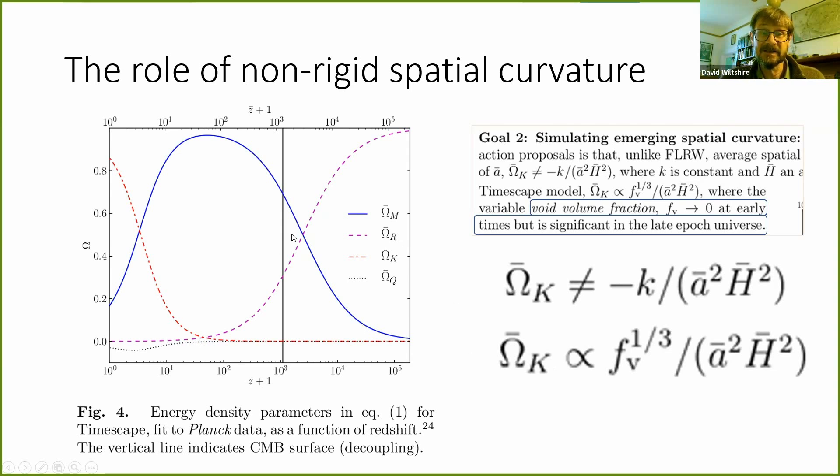These are fits to the Planck CMB data, so at very large redshifts, it looks just like the normal model. So it's just that what is dominating at late times is emerging spatial curvature, which I call the kinetic curvature, because it really is gradients of the kinetic energy which are important. People focused a long time on the kinematic back reaction, but what is that? It's tiny, it's small.